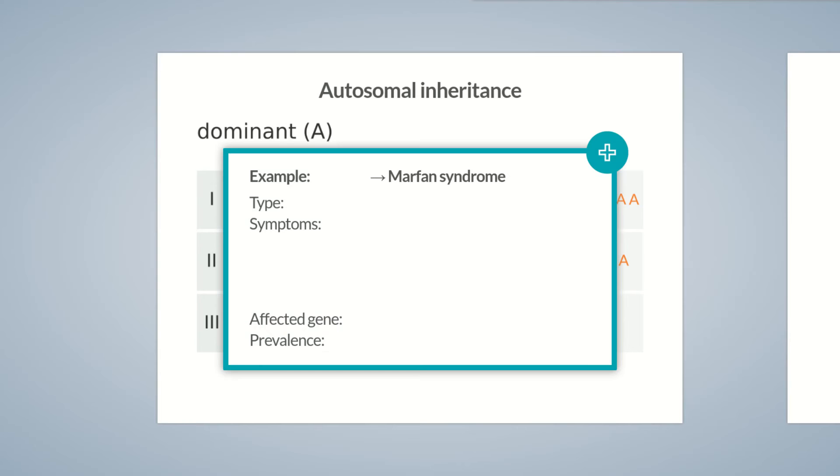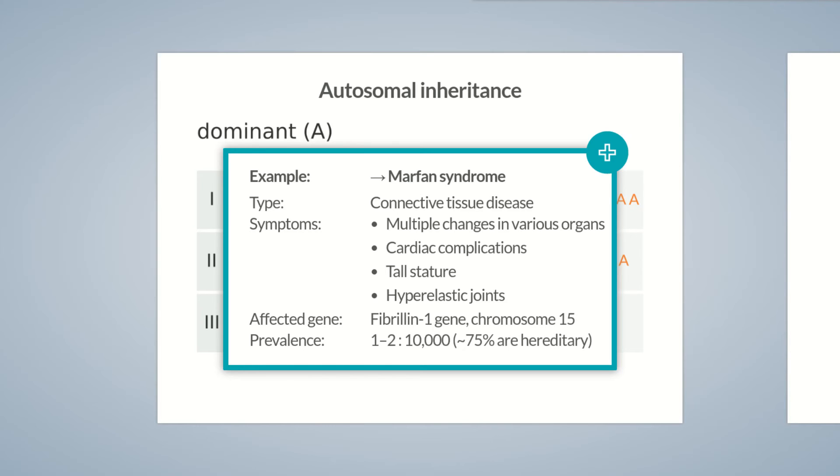One example of an autosomal dominant inheritance pattern is Marfan syndrome, which is a connective tissue disease resulting in impaired microfibrile synthesis. It leads to multiple pathological changes in various organs, especially the heart. Other characteristic manifestations include tall stature and hyperelastic joints. Marfan syndrome is a mutation of the fibrillin 1 gene on chromosome 15.